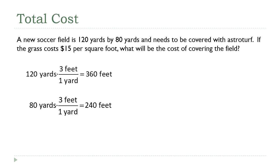Now I have the total dimensions of the field in the units I need. So now we can find the area. The area of a rectangle is length times width. Putting the numbers in — 360 and 240 feet — that comes out to 86,400 square feet.